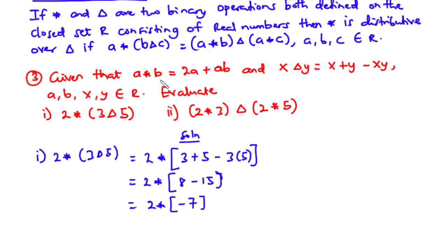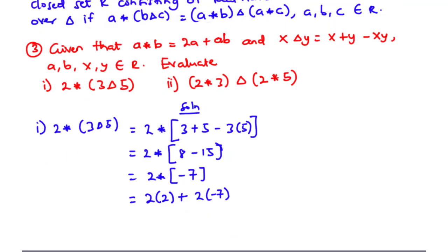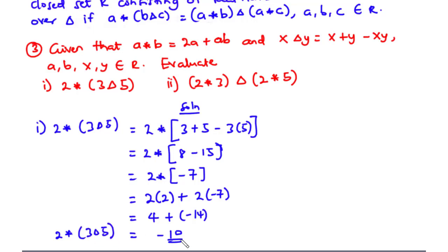We are going to use the operation star to combine 2 and negative 7. Using A star B with A equal to 2 and B equal to negative 7, we have 2 times 2 plus 2 times negative 7. 2 times 2 is 4, and 2 times negative 7 is negative 14. So 4 minus 14 equals negative 10. Therefore 2 star (3 delta 5) is equal to negative 10.